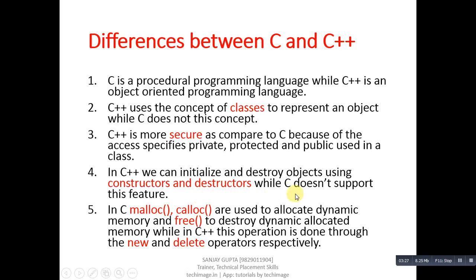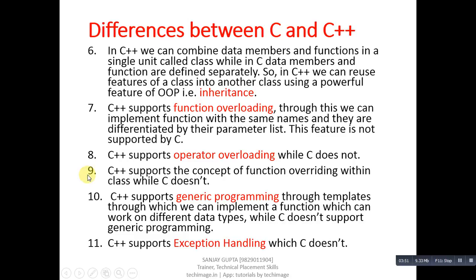In C++, we can initialize and destroy objects using constructors and destructors, while C doesn't support these features. In C, malloc and calloc are used to allocate dynamic memory, and free is used to deallocate it. In C++, this is done through the new and delete operators respectively — new allocates and delete deallocates dynamic memory.